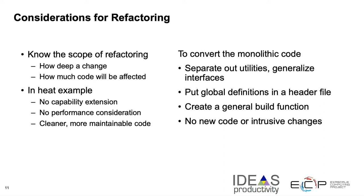In the heat example, we do not want any capability extension and there is no consideration about performance — we just want cleaner, more maintainable code. The steps we take to convert this monolithic code are: separate out the utilities, generalize interfaces, move global definitions into a header file that can be included in all the source files, and create a general build function, since the monolithic code can just be compiled with a single command but that's not the right way to build non-trivial code. In this refactoring, we are not writing any new code and not making any intrusive changes.